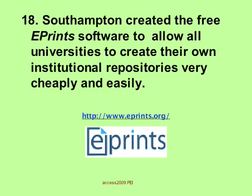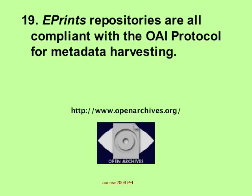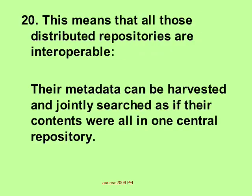Southampton University has created the free ePrince software to allow all universities to create their own institutional repositories very cheaply and easily. The software is free, and the only expense is the time to set up the repository — some sysad time to set it up and a little maintenance time. ePrince is the first such software; it's used all over the world and is also the model from which DSpace was cloned. ePrince repositories as well as DSpace repositories are all compliant with the OAI Open Archives Initiative protocol for metadata harvesting, which means all those distributed repositories are interoperable — their metadata can be harvested and jointly searched as if their contents were all in one central repository.